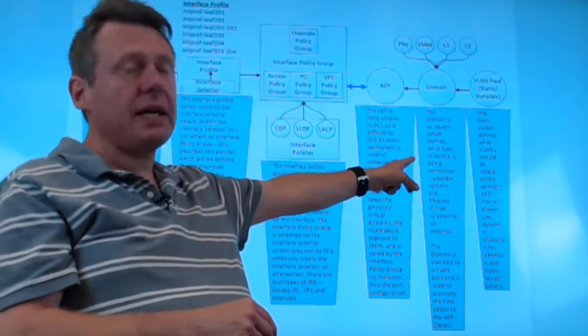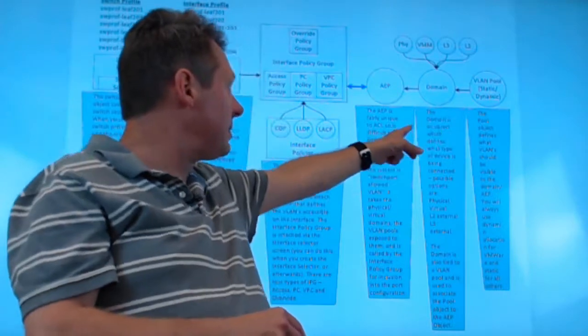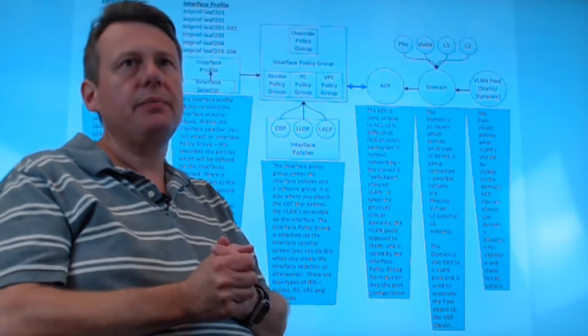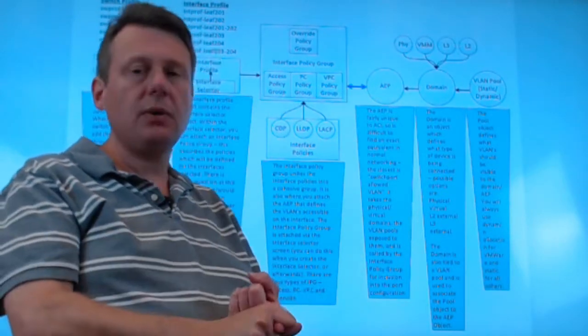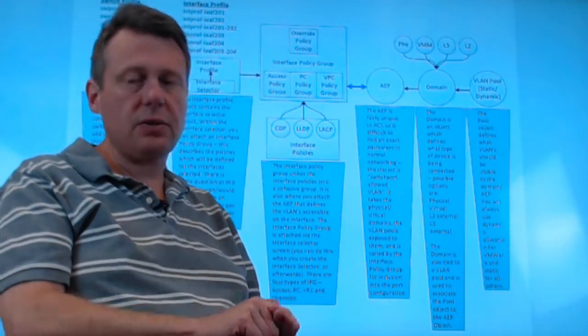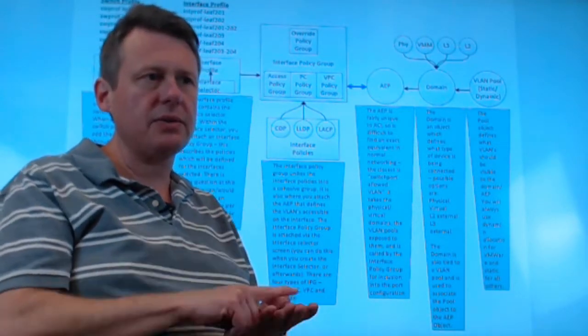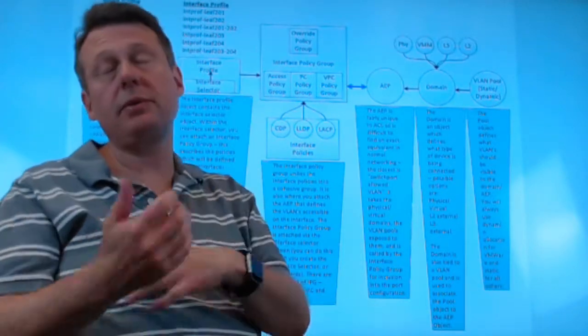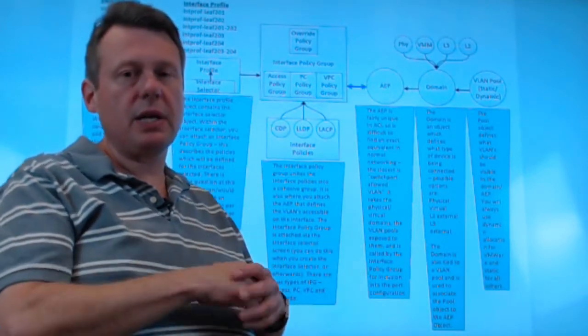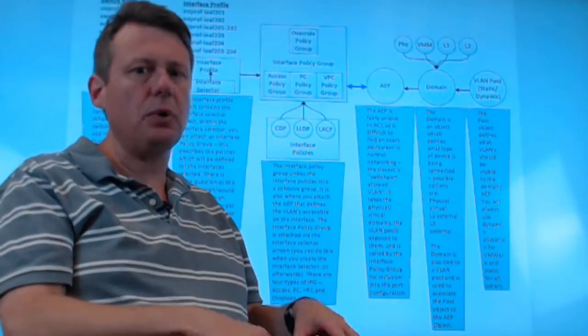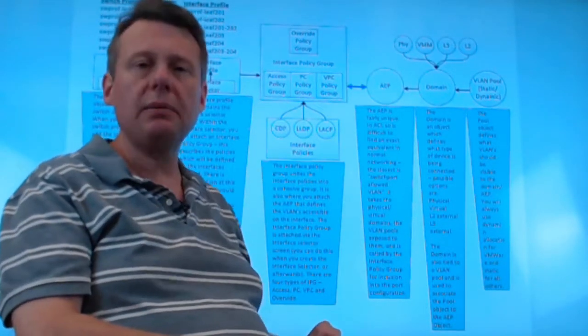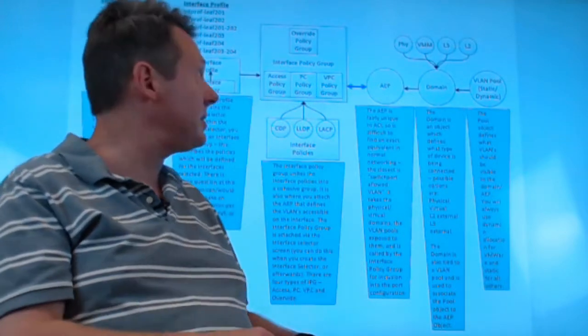The pool object gets called by the domain object. The pool is linked to the domain. The domain is just saying what type of connectivity do I want here. Do I want physical connectivity? Do I want hypervisor connectivity? Do I want an external routed connection or an external bridged connection? Those are called L3 externals or L2 externals. For this example, and when we do the next video, which is going to go onto the GUI and actually cement some of this in for you, we're just going to worry about physical domains. That's it. That will make it very easy. Just physical domains.